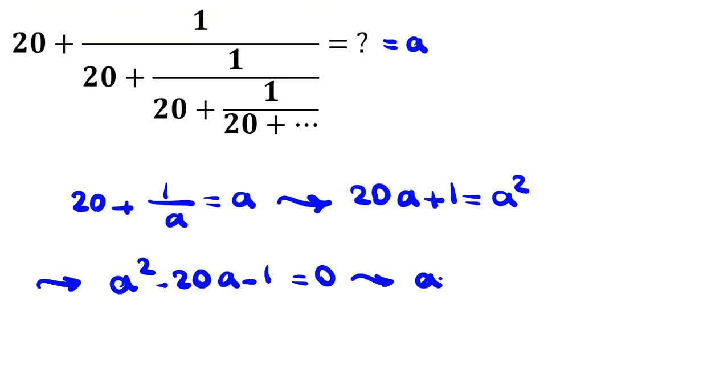Now we want to find a. a is negative b plus minus, using the quadratic formula, b squared which is 400 minus 4ac which is 4, over 2.